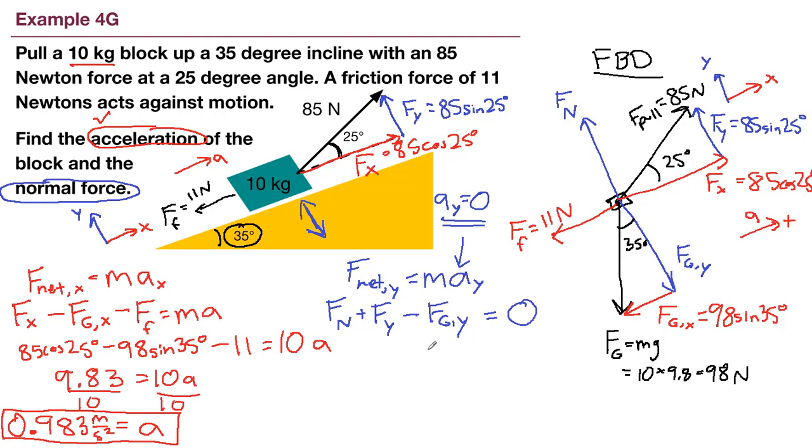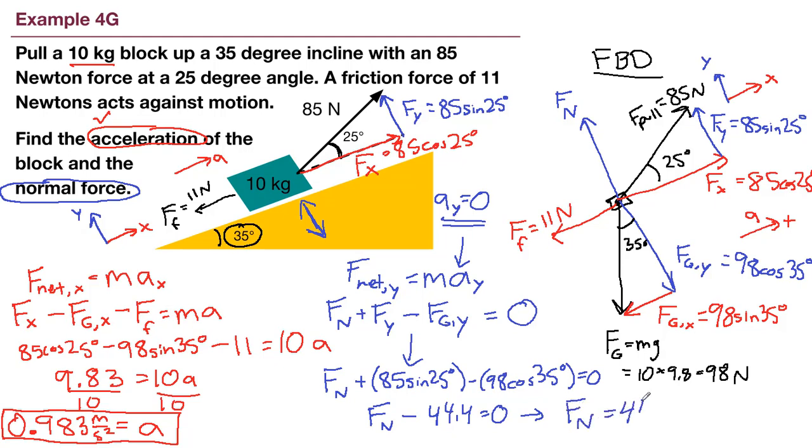And apparently we have a motorcycle. All right. So we have in our picture, we could have done this already, that the y component of gravity is 98 cosine 35 degrees. All right. So normal force is what we're solving for. The y component of our force here is 85 sine 25 degrees. The y component of our gravity here is 98 cosine 35 degrees. That all equals 0. So we end up with the normal force. When we put both of these into our calculator, it's minus 44.4 newtons equals 0. So if we add that 44.4 to both sides, that is our normal force.